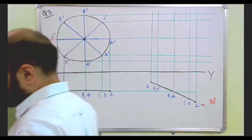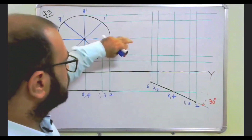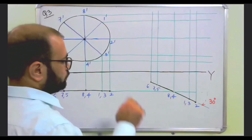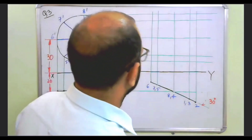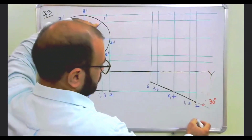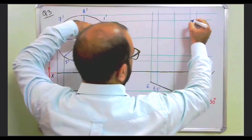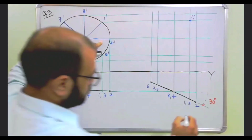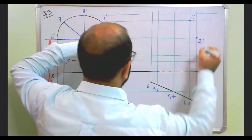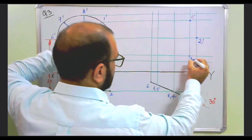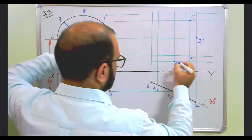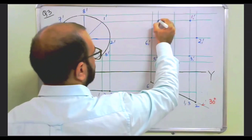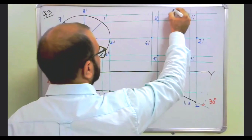Now we have drawn the projection lines and we will match the corresponding points. Matching corresponding points: match one with one. The line coming from 1 dash and the line from 1 — name it 1-1 dash. Then from 2: 2-1 dash. Then 3-1 dash, 4-1 dash, 5-1 dash, 6-1 dash, 7-1 dash, and finally 8-1 dash.